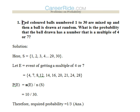There are red colored balls numbered 1 to 30 which are mixed up, and then a ball is drawn at random. What is the probability that the ball drawn has a number that is a multiple of 4 or 7? So the total sample space would be, as the balls are numbered from 1 to 30: 1, 2, 3, 4 till 29 and 30.